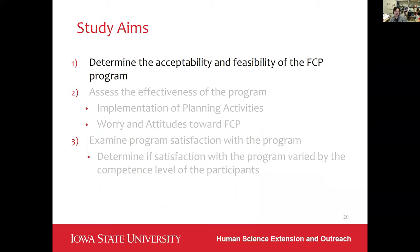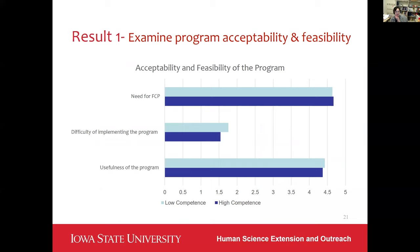Our first aim was to determine the acceptability and feasibility of the program. Given our interest in whether the program was similarly received based on competence level, I'll present the findings broken down by these two groups. We found that most participants, regardless of competence level, reported perceiving a high need for future care planning after the program, showing that the core idea of future care planning was acceptable. In terms of feasibility, most participants rated it as not that difficult. As expected, the higher competence group reported lower difficulty levels, although the difference was not significant. Both groups rated that the program provided much needed and useful information, with no significant difference between groups.